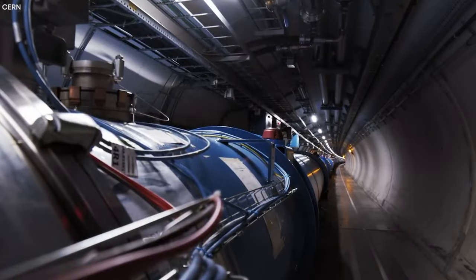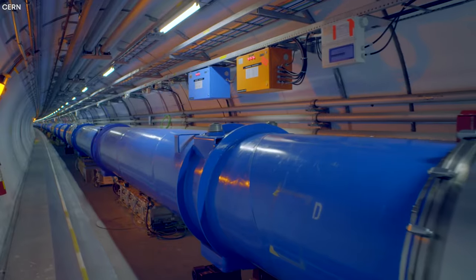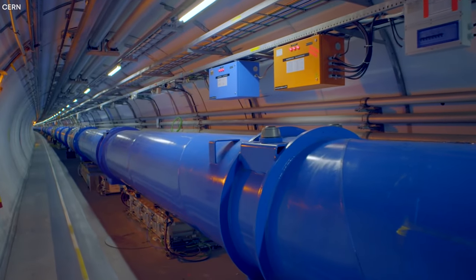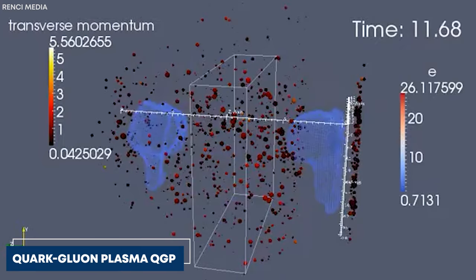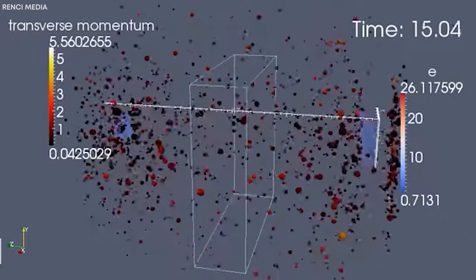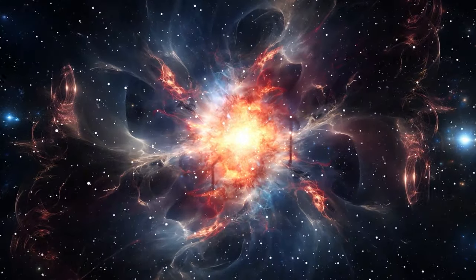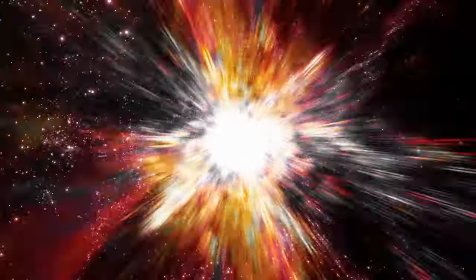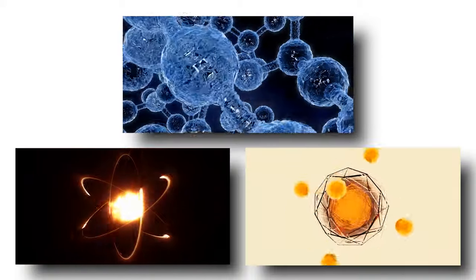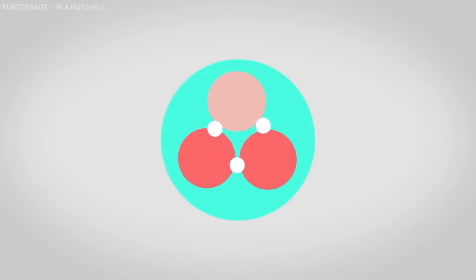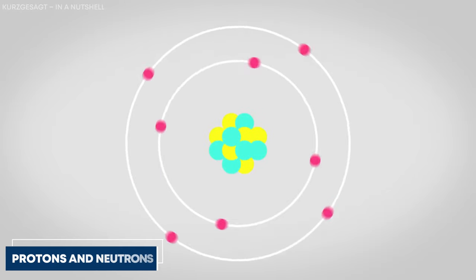One of the remarkable achievements of the LHC has been the creation and study of a state of matter known as the quark-gluon plasma. This state of matter is believed to have existed in the early universe, just microseconds after the Big Bang, when temperatures were so high that the fundamental constituents of matter, quarks and gluons, were not confined within hadrons, such as protons and neutrons.